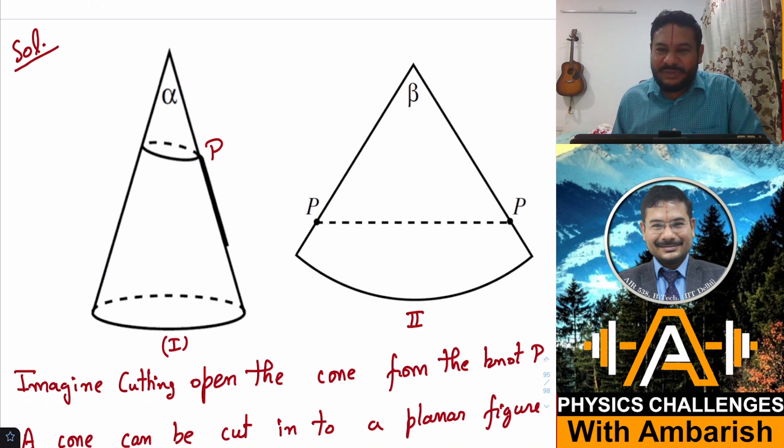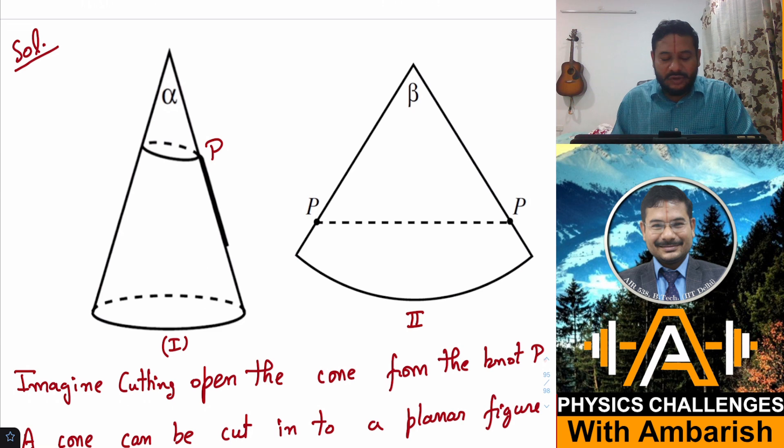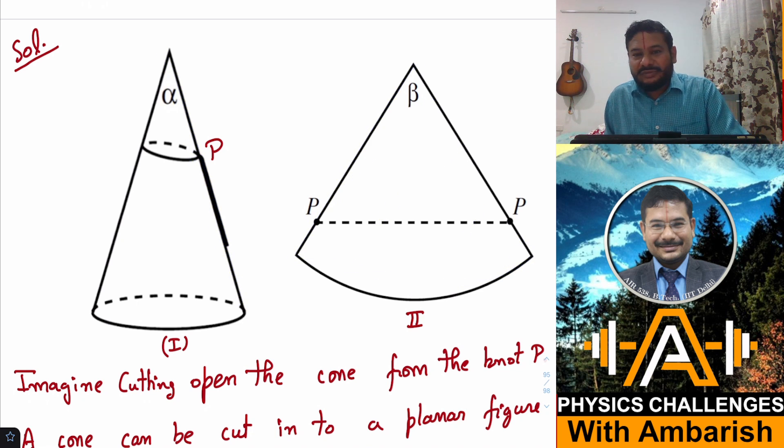So all of you must be aware that when we cut a cone, we get a planar figure, right? So let me cut the mountain. So somewhere here there will be a knot. Let's say P is the point of the knot. And suppose I cut this cone along the knot, then I will be able to get a planar sector shaped figure, right? Which forms this cone on rolling.